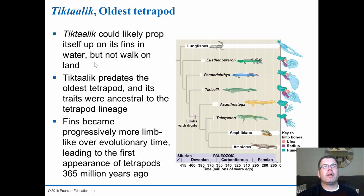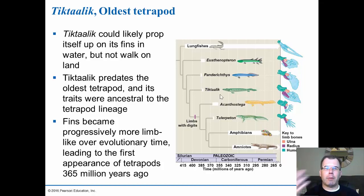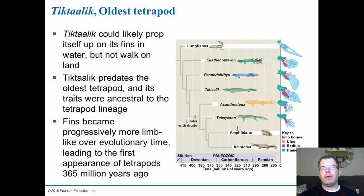The Tiktaalik could prop itself up on its fins but could not walk on land because it lacked digits. The biggest thing was getting limbs with actual digits. Once they got onto land, they started developing more digits, growing from the limbs and allowing them to grasp things and move. Fins became progressively more limb-like over evolutionary time. The first tetrapods about 365 million years ago spent most of their time on land — unlike earlier animals that only came on land briefly to breathe or grab food before going back into the water. These vertebrates now spent most of their time on land.